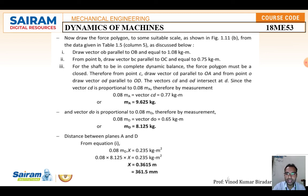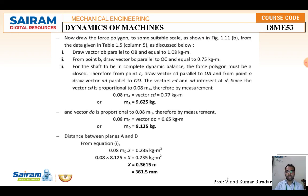To find the distance between planes A and D: set 0.08 × M_D × X = 0.35, and since M_D is known, solve for X = 361.5 mm. So mass A = 9.62 kg, mass D = 8.125 kg, and axial distance A to D = 361.5 mm. The key step is correctly constructing the couple polygon and force polygon diagrams.